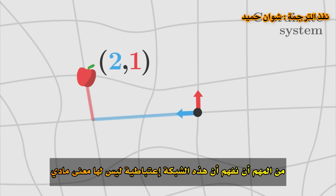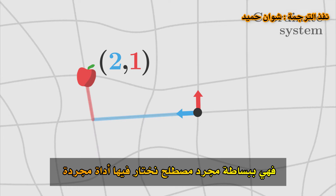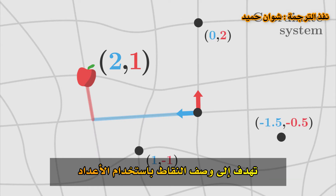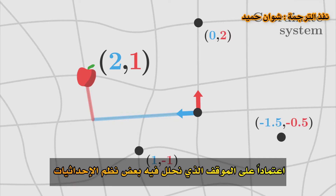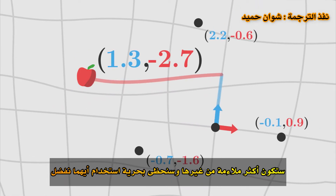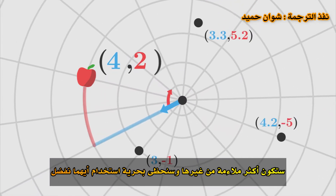It is important to understand that this grid is arbitrary. It has no physical meaning. It is simply a convention that we choose — an abstract tool whose purpose is to describe points using numbers. Depending on what situation we analyze, some coordinate systems will be more appropriate than others, and we will have the freedom to use whichever we prefer.